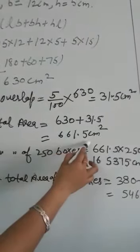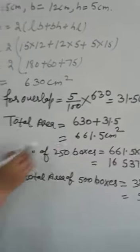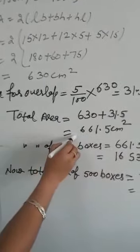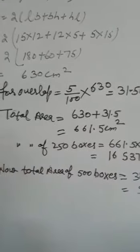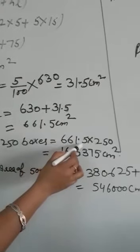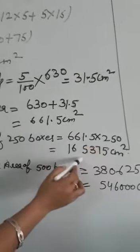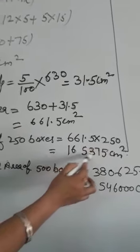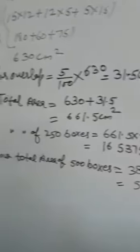Now total area of cardboard we will find by adding these two. This is 661.5 cm square. Now this is the total area of one box and we require 250 boxes. So we will find total area of 250 boxes. 661.5 multiply 250 that is 1,65,375 cm square.